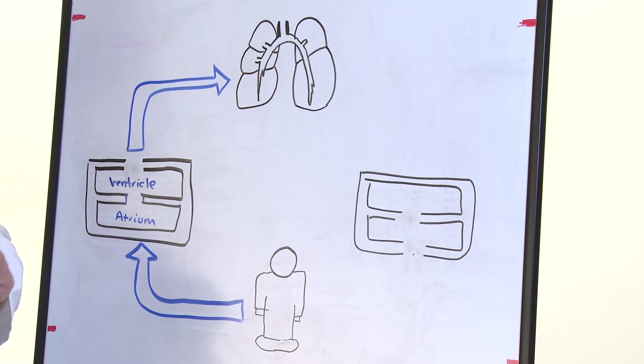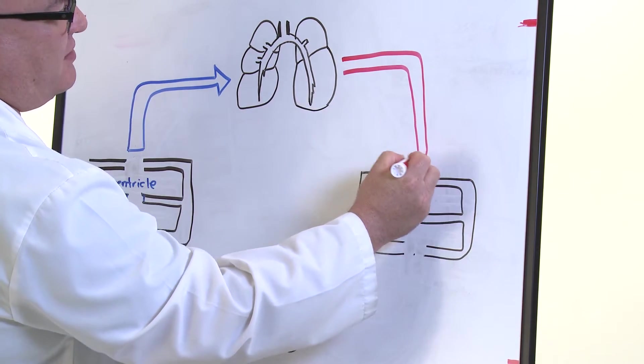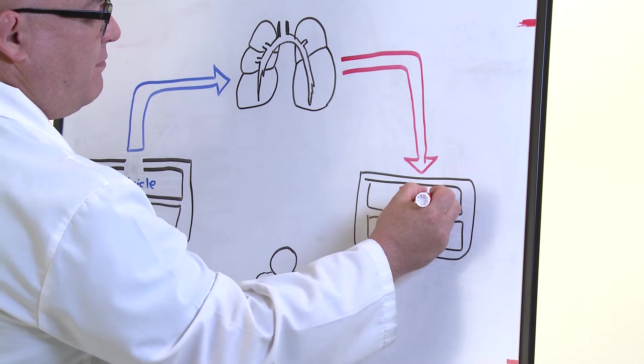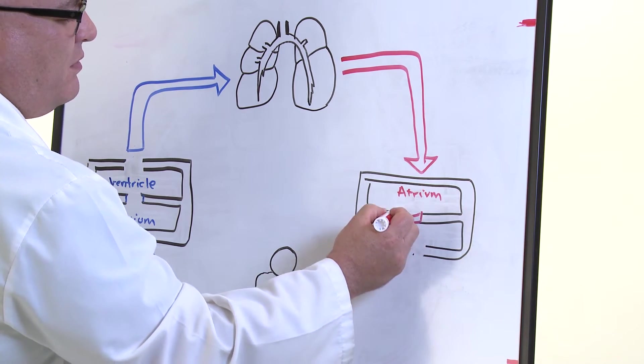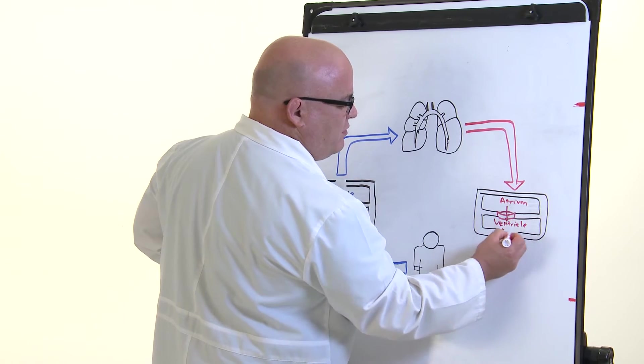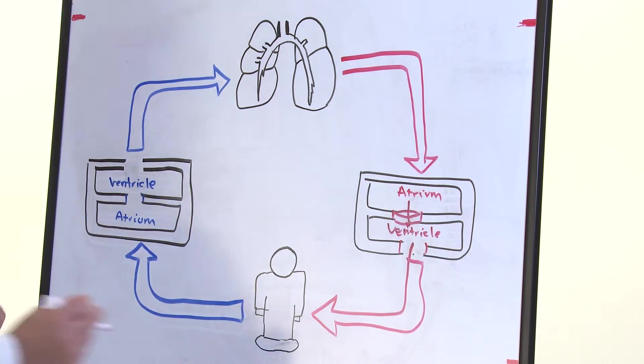In the lungs, the blood is then oxygenated. All of the waste products are removed. The oxygen-rich blood is then sent to the left side of your heart, where it goes through the left atrium, across the mitral valve, into the left ventricle. Then it crosses your aortic valve, and this oxygen-rich blood is then sent to your body.